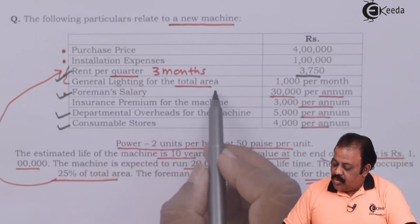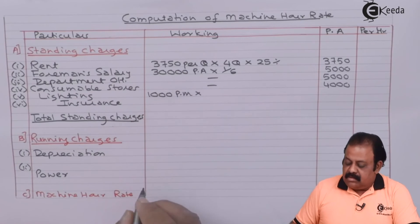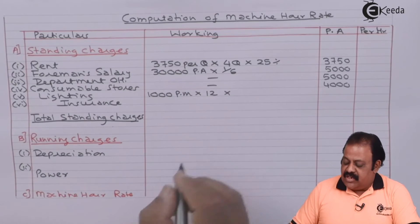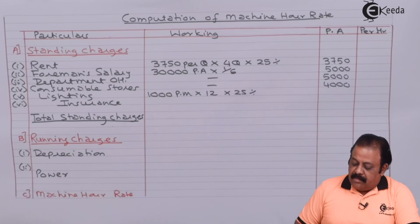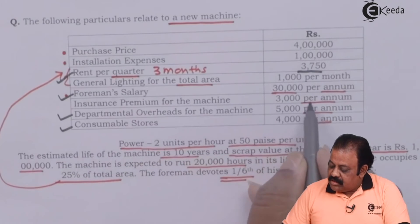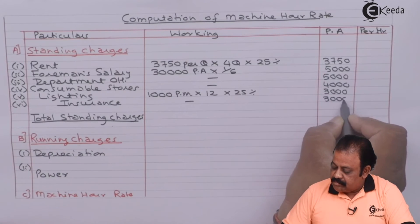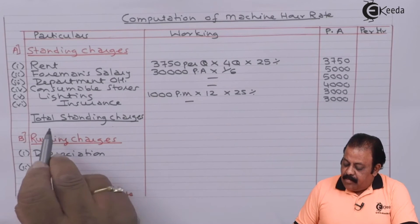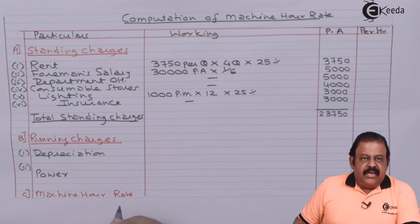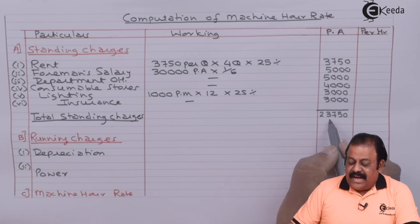General lighting for the total area is 1,000 per month. So 1,000 multiplied by 12 months, then multiplied by 25% area occupied by the machinery, gives 3,000 per annum. Insurance premium for the machine is directly given as 3,000 per annum. Adding all standing charges together gives a total of 23,750 per annum.